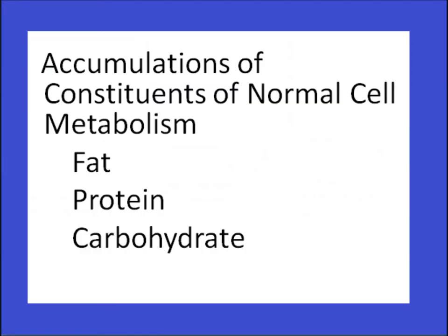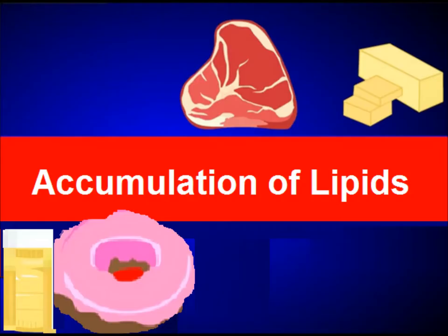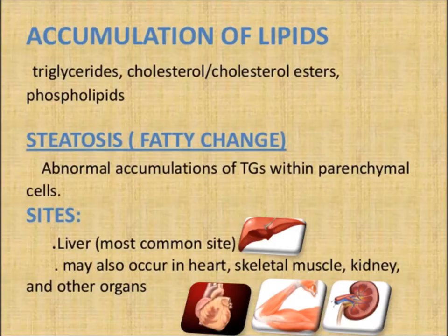Today we are going to discuss accumulation of constituents of normal cell metabolism — that is fat, protein, and carbohydrate. In this video we will discuss accumulations of lipids. The main lipids include triglycerides, cholesterol, cholesterol esters, and phospholipids.